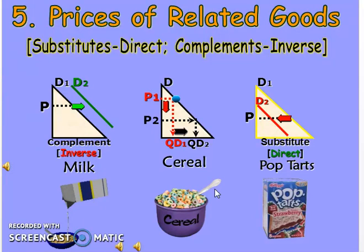Substitutes directly affect the demand curve. For example, if the price of Pepsi increases from one dollar to two dollars, people would buy less Pepsi, but the demand curve for Coke would shift rightward. This slide will be discussed in more detail in the next lecture. Thank you very much.